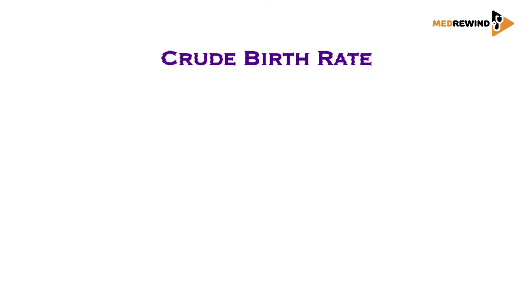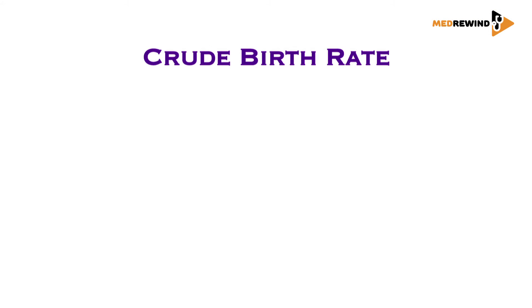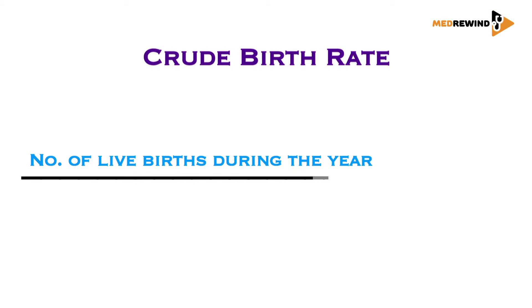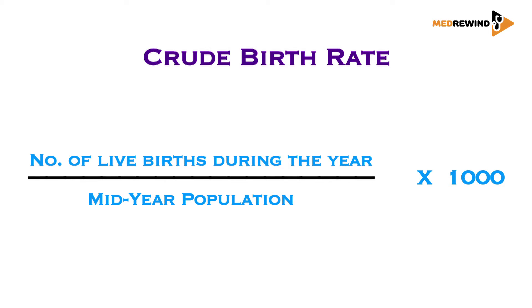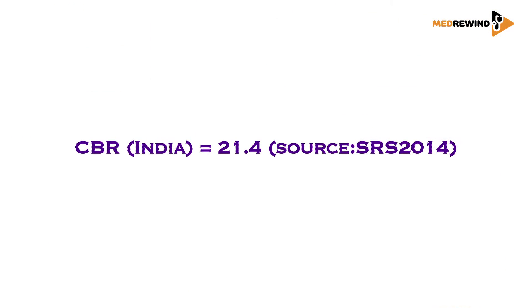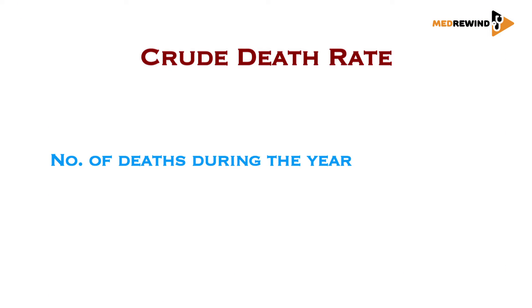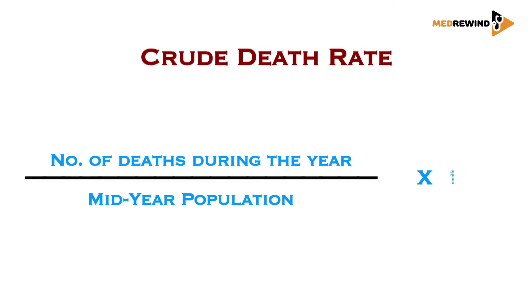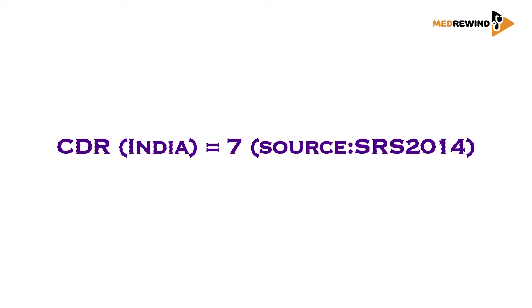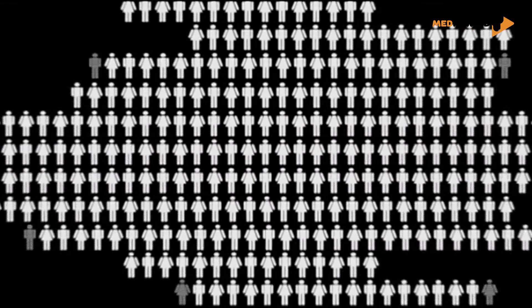Crude birth rate, as all of you know, is basically the total number of births taking place per thousand mid-year population. Our current crude birth rate is 21.4. Contrast that with the crude death rate, which is the number of deaths happening per thousand mid-year population — currently seven. As you can see, our birth rate is three times our death rate, and that's the reason why our population is growing.